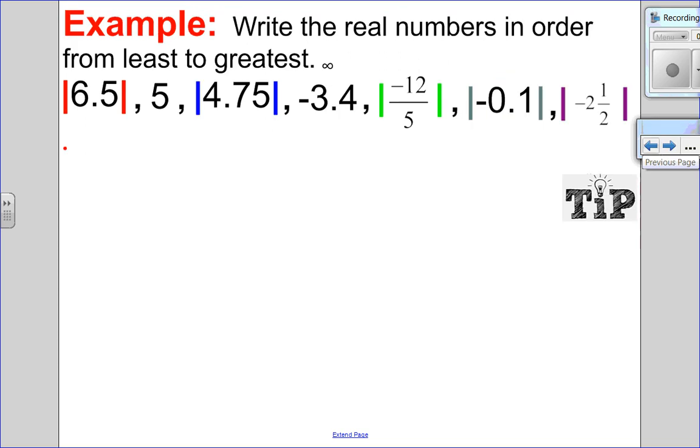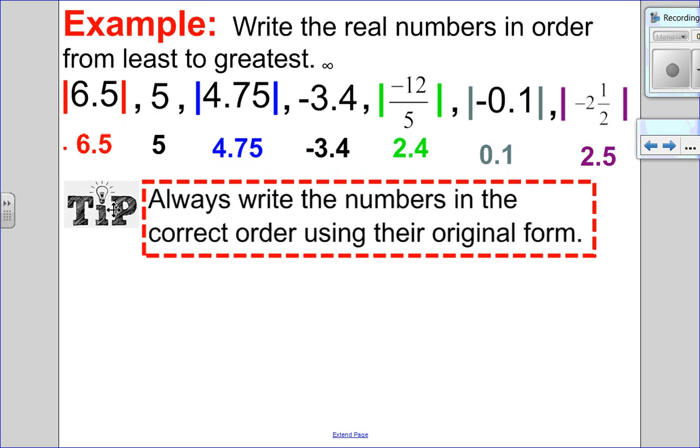Let's try a question where we're ordering numbers. Some of them have absolute values, some of them don't. We're going to write this from least to greatest. So let's evaluate each one before I order it. So the absolute value of 6.5 is 6.5. 5 doesn't have an absolute value. The absolute value of 4.75 is 4.75. Negative 3.4 doesn't have an absolute value so it stays the same. The absolute value of negative 12 over 5. Well, negative 12 over 5 is negative 2.4, and the absolute value of that is just positive 2.4. The absolute value of negative 0.1 is 0.1, and the absolute value of negative 2.5 is just 2.5.